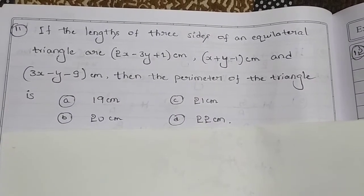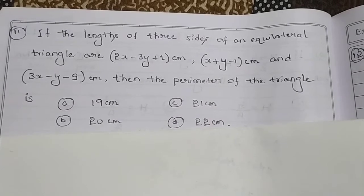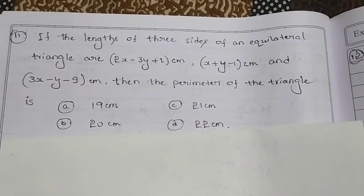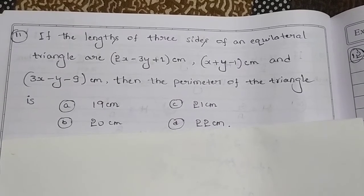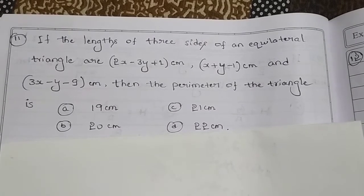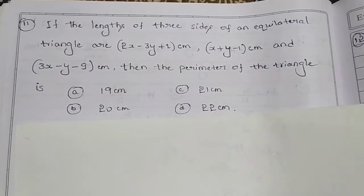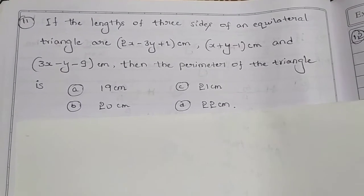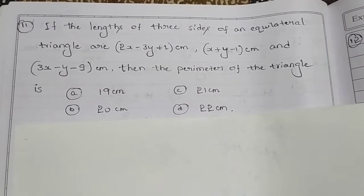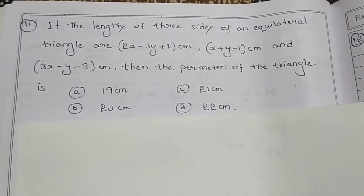Next problem: If the lengths of three sides of an equilateral triangle are 2x minus 3y plus 1 centimeter, x plus y minus 1 centimeter, and 3x minus y minus 9 centimeter, then the perimeter of the triangle is — Option A: 19 cm, Option B: 20 cm, Option C: 21 cm, Option D: 22 cm.